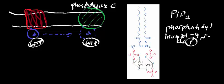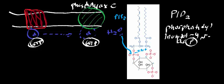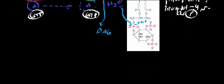Phospholipase C is a very important enzyme. It's going to increase the concentration of intracellular IP3. Phospholipase C is a serine lipase, or serine hydrolase — this is not the mechanism, just the net effect. You put in PIP2 and you get two products: one is diacylglycerol, which we'll look at later, and the other is IP3.